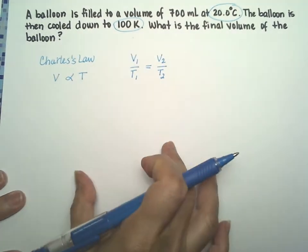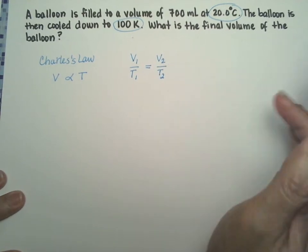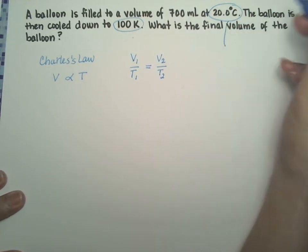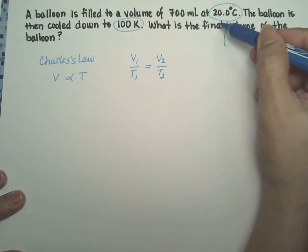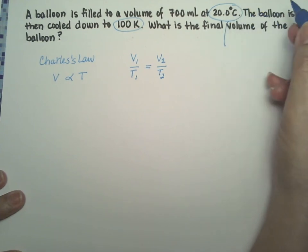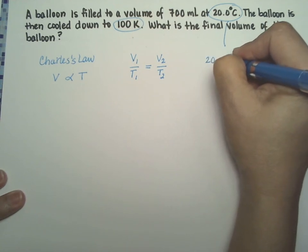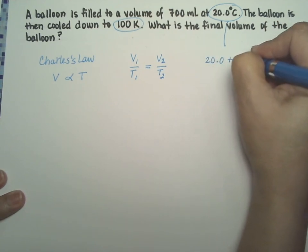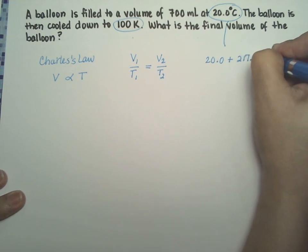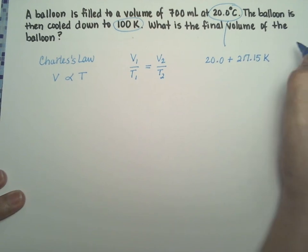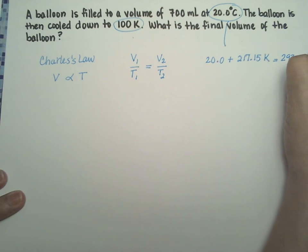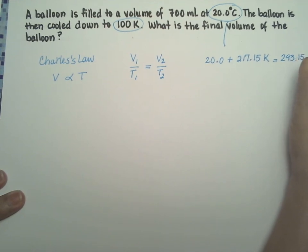We're ready to put our numbers in. We're going to solve for V2, but before we even start, let's convert the 20.0 degrees Celsius to Kelvins. So you take your degrees Celsius and you add 273.15 Kelvins, and that gives you 293.15. If you don't want to use the decimals, that's fine, but it's not going to hurt you.